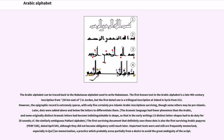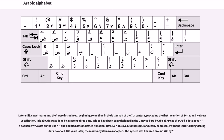Important texts were and still are frequently memorized, especially in Quran memorization, a practice which probably arose partially from a desire to avoid the great ambiguity of the script. Later still, vowel marks were introduced, beginning some time in the latter half of the 7th century, preceding the first invention of Syriac and Hebrew vocalization. Initially this was done by a system of red dots, said to have been commissioned by Abu al-Aswad al-Du'ali: a dot above equals fatha, a dot below equals kasra, a dot on the line equals dhamma, and double dots indicated tanwīn. However, this was cumbersome and easily confusable with the letter-distinguishing dots, so about 100 years later the modern system was adopted.